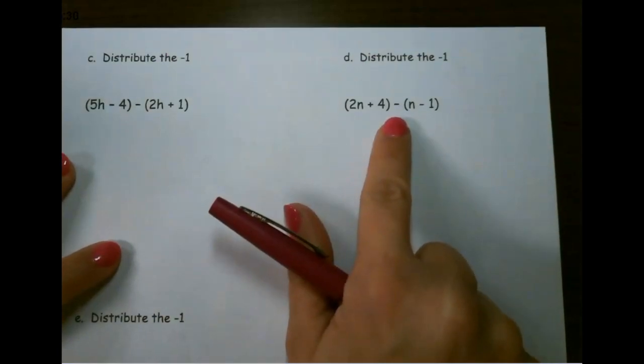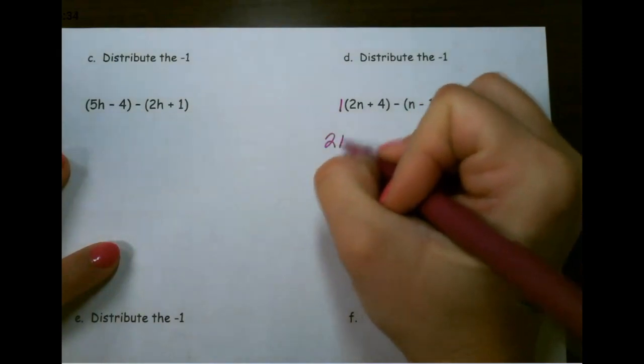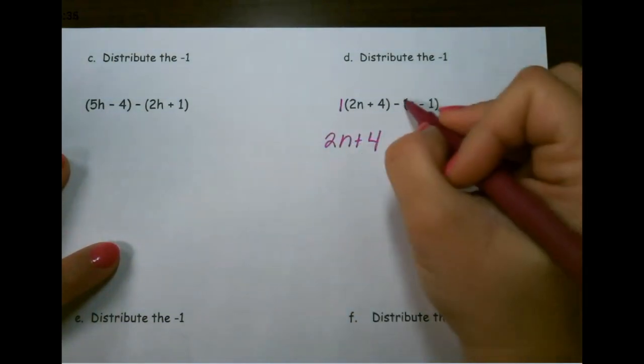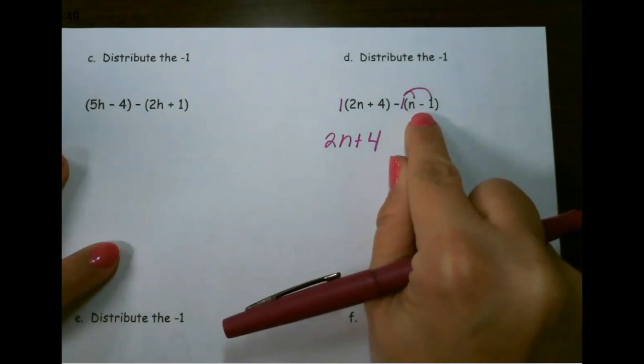Let's look at this last example. So again, it's just positive 1, so that doesn't change anything about our first expression. But here, we're distributing negative 1, which means everything on the inside needs to flip.